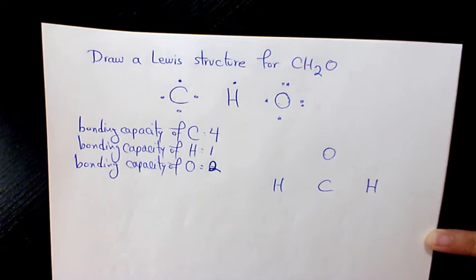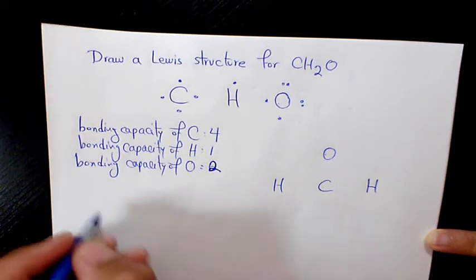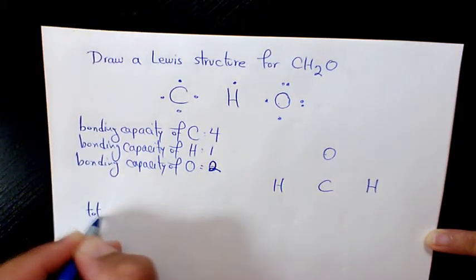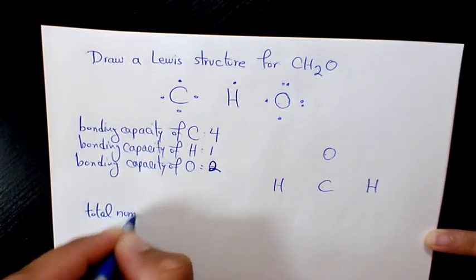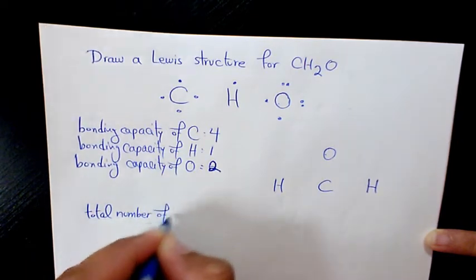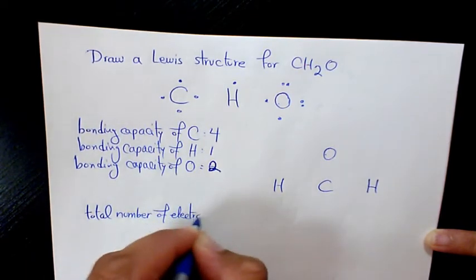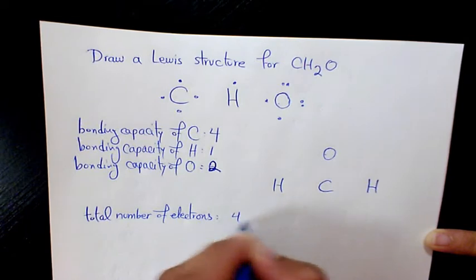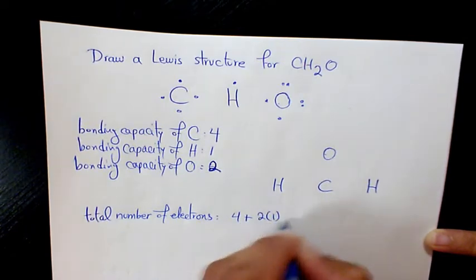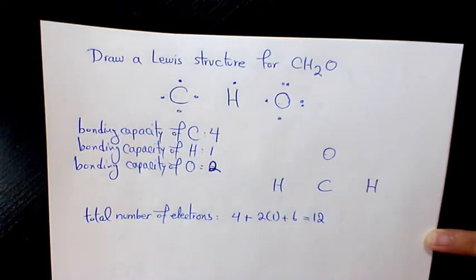Then we need to add up the number of valence electrons available in an atom of each of the elements. So total number of electrons is going to be 4 plus 2 times 1 plus 6. It's going to be 12.